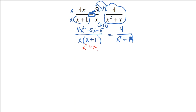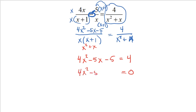Because the denominators are the same, I only need to worry about the numerators. To solve the quadratic, get zero on one side: 4x squared minus 5x minus 9 equals 0. If you're good at factoring, it's worth trying. Let's try 2x times 2x for the 4x squared — that gives 6x on both outside and inside, which won't give negative 5x. Let's try 9 and 1 next.